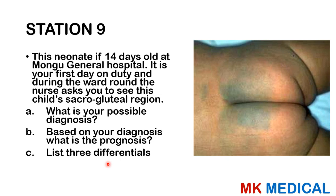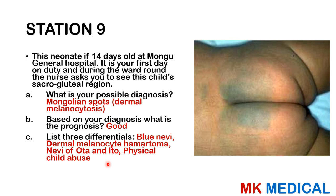Station 9. This neonate is 14 days old at Mongu General Hospital. During the ward round, the nurse asks you to see the child's sacral gluteal region. Most likely these are Mongolian spots, also known as dermal melanocytosis. The prognosis is generally good — most disappear, with about 45% disappearing within the first year. Three differentials include blue nevi, dermal melanocyte hamartomas, nevi of Ota or Ito, as well as physical child abuse.